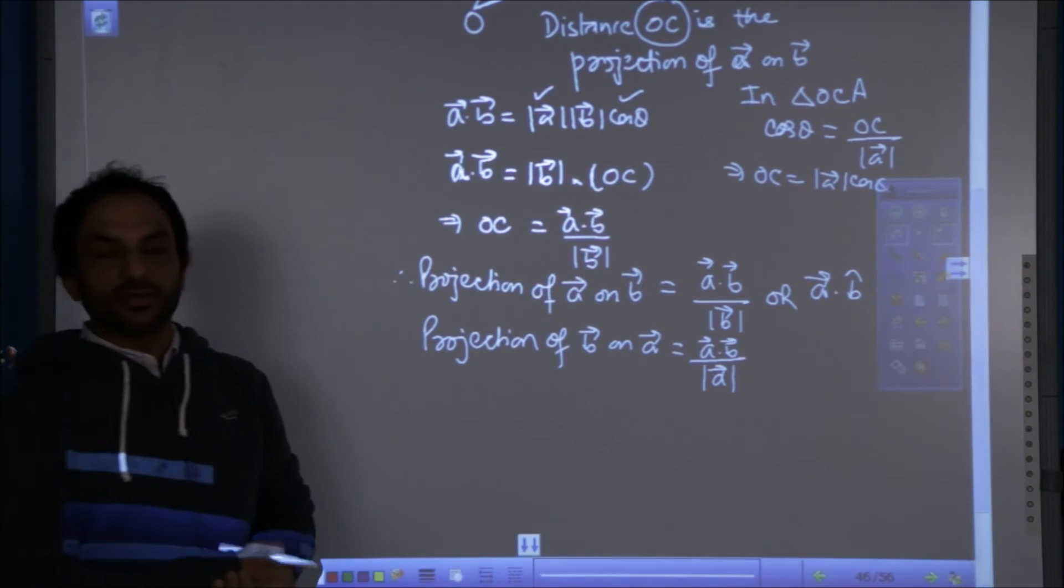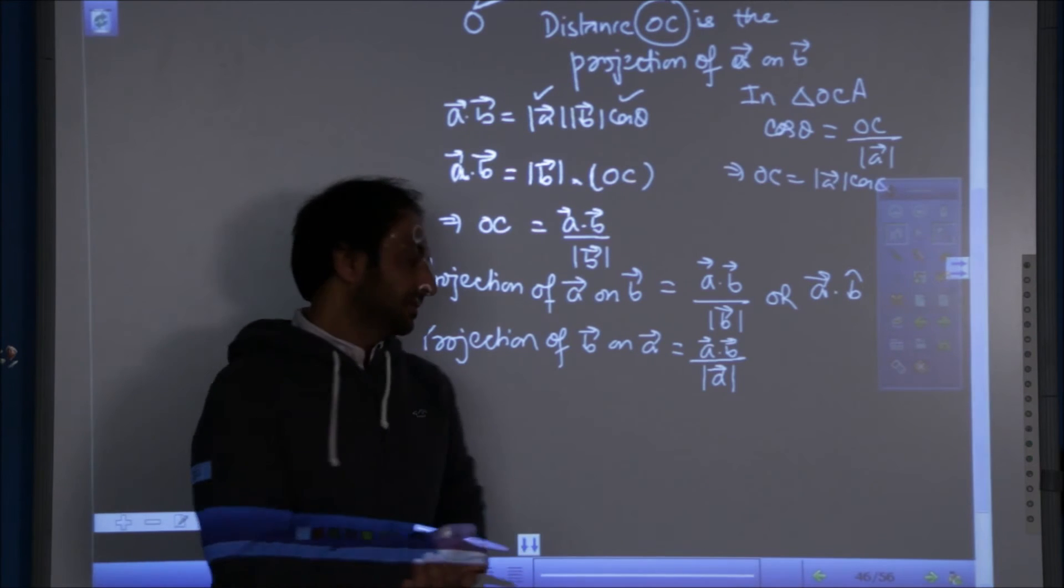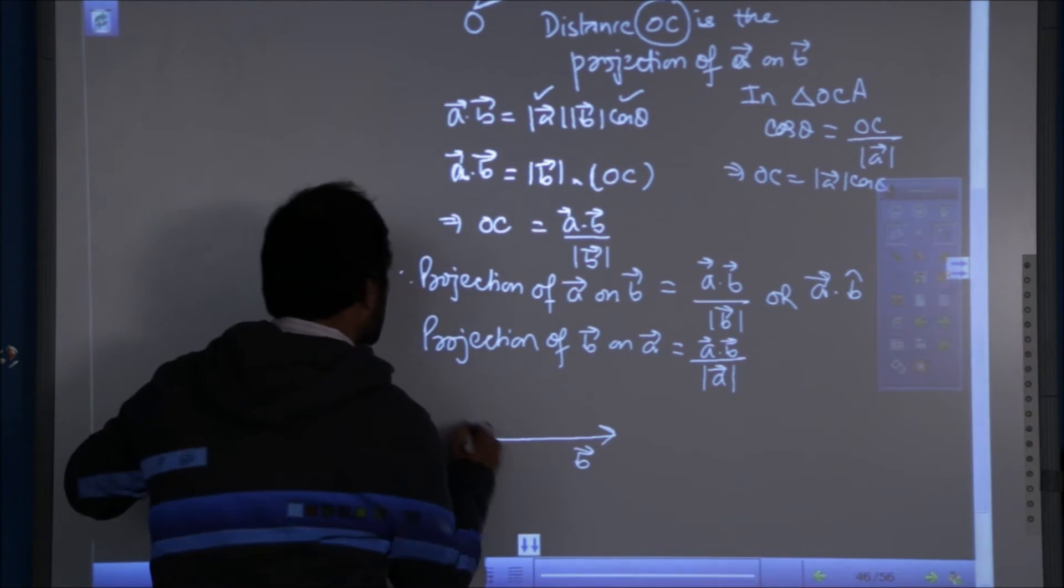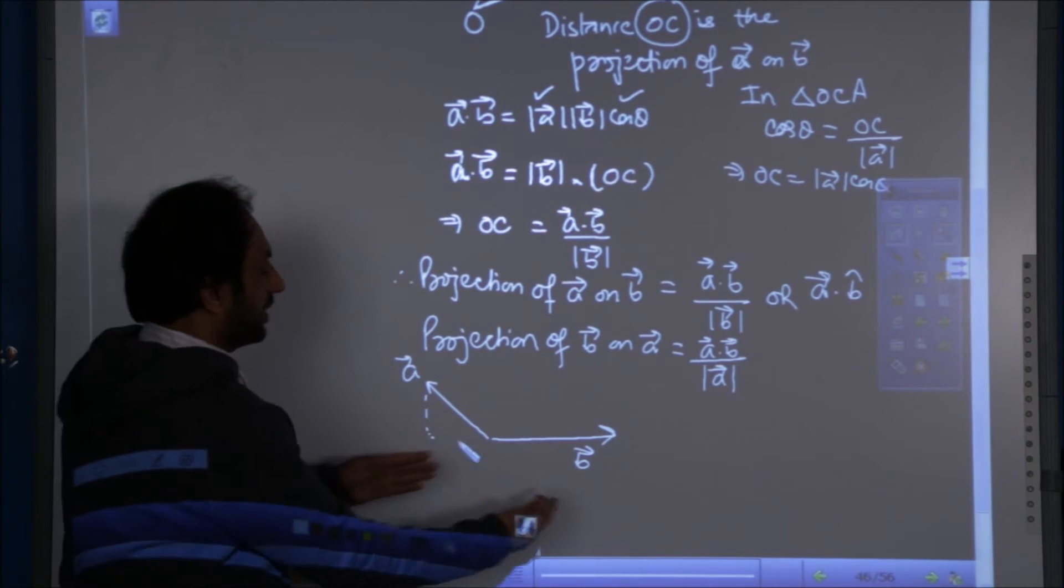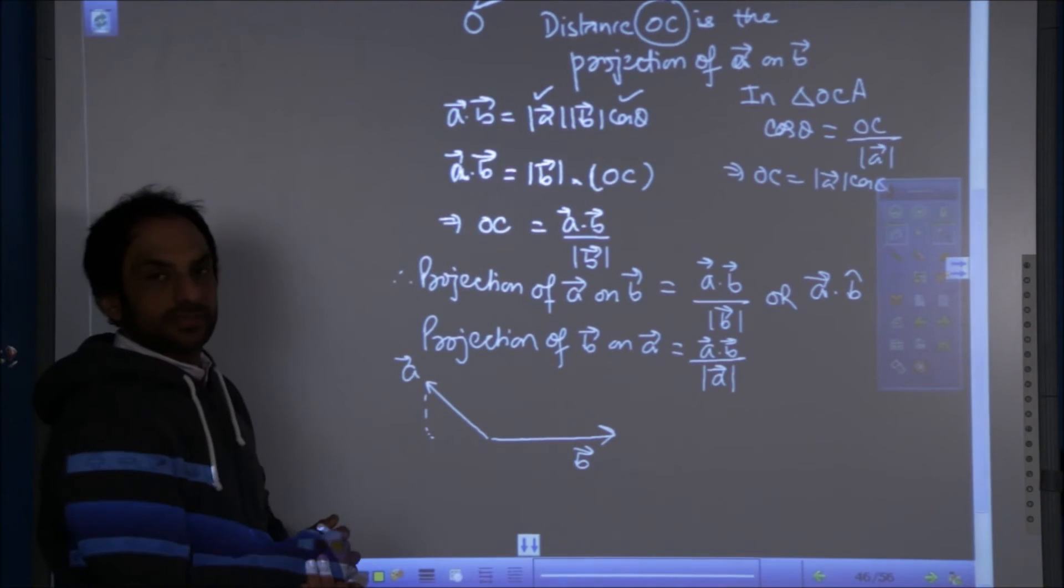So this is a scalar quantity. It can have a negative value also. In case, say this is B vector and this is A vector, its projection will be on the other side of vector B. And the answer will obviously be negative.